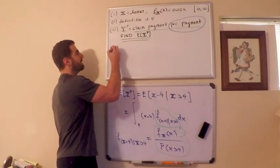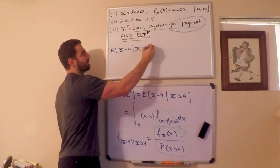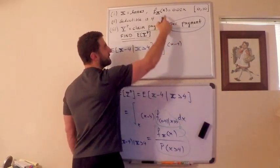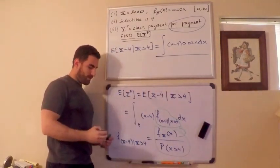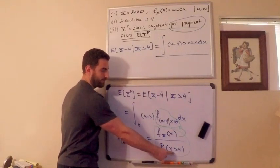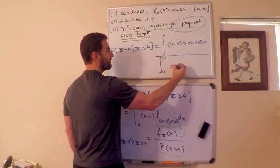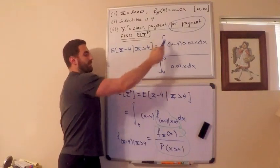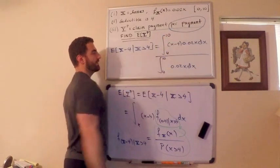The expected claim payment, which is X minus 4 given that I make a claim payment, is equal to the integral from 4 to 10 of X minus 4 times the PDF, the loss PDF, which is 0.02X dX, divided by, and this is the part I'm skipping just maybe two steps, I'm putting the probability X is greater than 4 underneath. This itself is an integral. This is 4 to 10 of 0.02X dX. The last thing we need is the bounds of integration on here, 4 to 10.